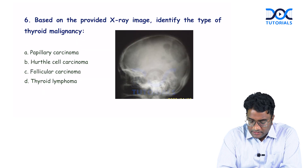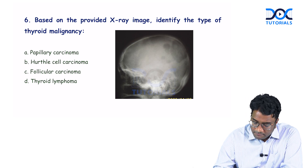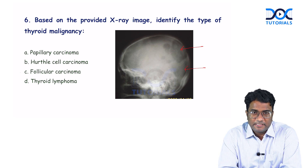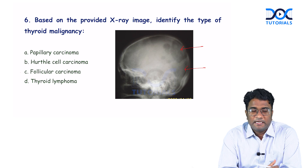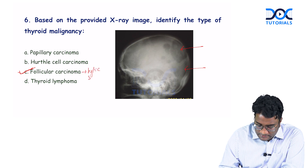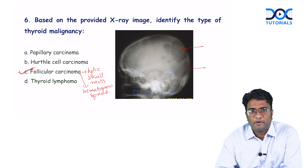Next question: based on a provided skull radiograph, identify the type of thyroid malignancy. The skull radiograph shows multiple lucent areas — multiple lytic lesions in the skull. These lytic metastases occur due to hematogenous spread of follicular carcinoma of the thyroid. The answer is follicular cancer of the thyroid.